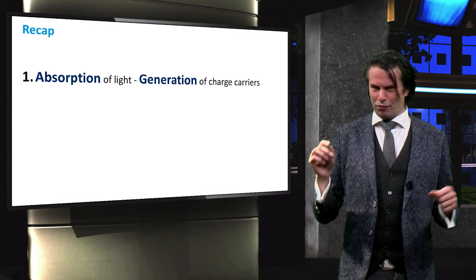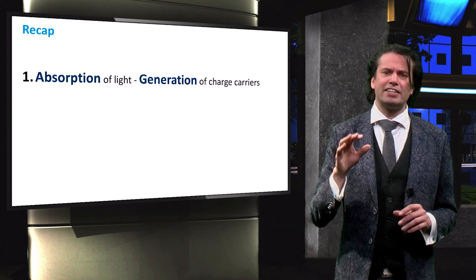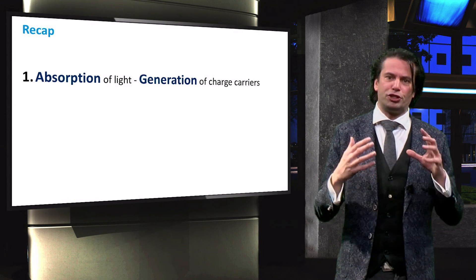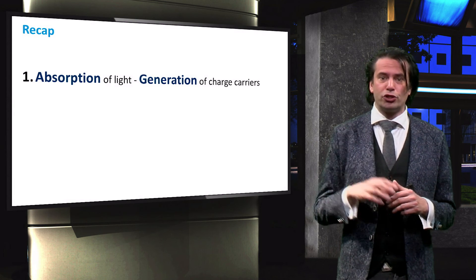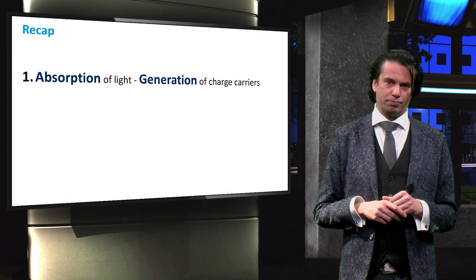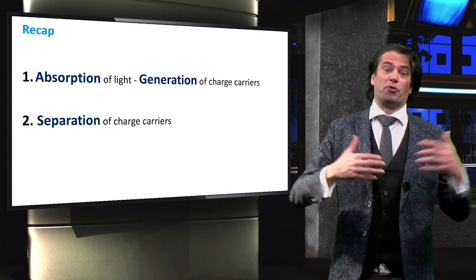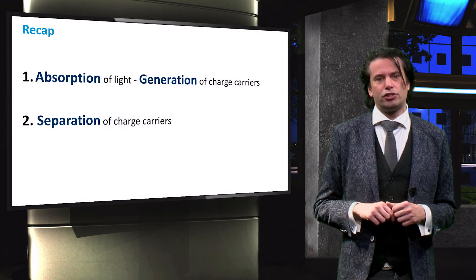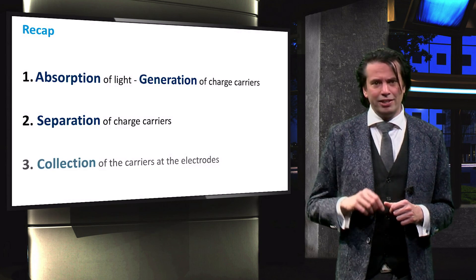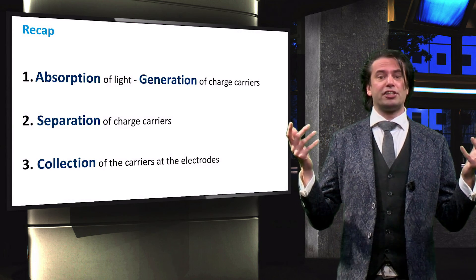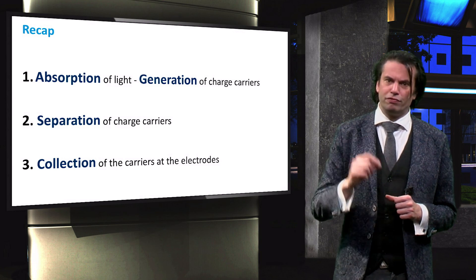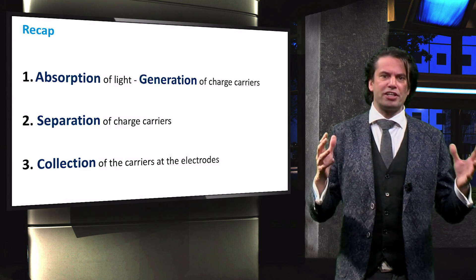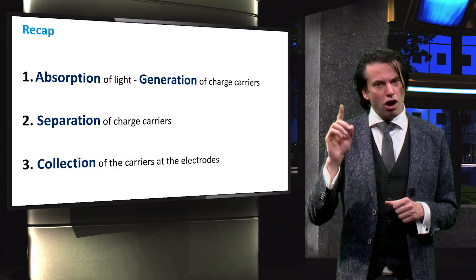In summary, we have seen how the photovoltaic effect involves the generation of charge carriers due to absorption of photons at a junction of two semiconductor materials, followed by the subsequent separation of the photo-generated charge carriers, and finally, the collection of the charge carriers at the terminals of the junction. In the next video we will look at the current and voltage characteristics of a solar cell.